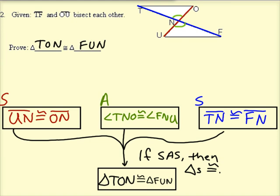So why are all of these segments congruent? The red segments, U-N and O-N, why are they congruent? Well, they're congruent because T-F and O-U bisect each other. And what that means is, I know that T-F bisects O-U. Also, O-U bisects T-F.